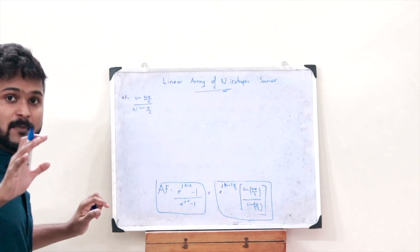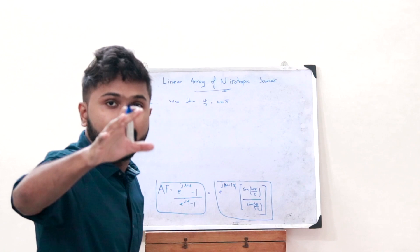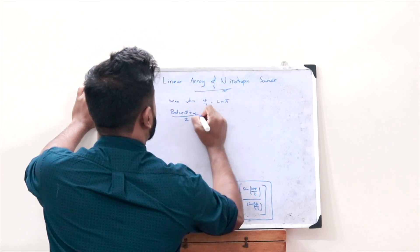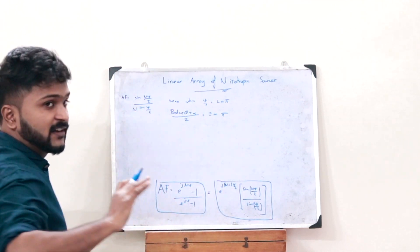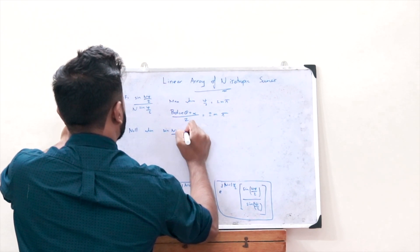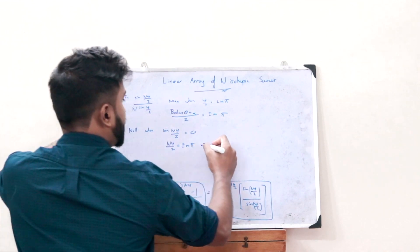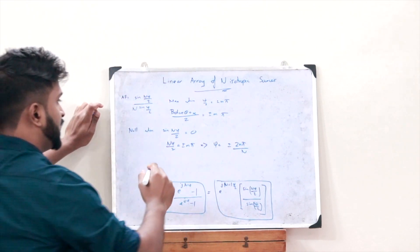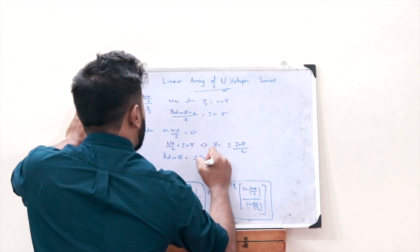The normalized array factor is maximum when ψ/2 = ±mπ, that is when (βd cos theta + α)/2 = ±mπ. It is null when the numerator is zero, i.e., sin(nψ/2) = 0, which means nψ/2 = ±mπ, so ψ = ±2mπ/n, that is βd cos theta = ±2mπ/n.